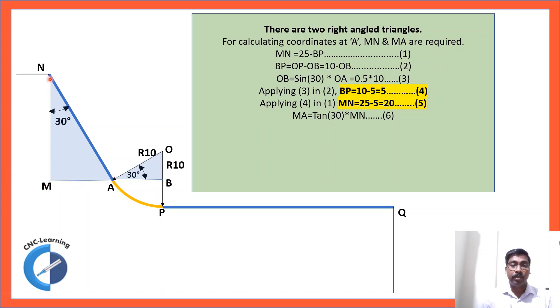we already saw 25 minus BP. So, 25 and BP we got as 5. So, MN is 20. Now, how to calculate MA? You have this right angle triangle and now you have this adjacent side. Now, MA is opposite side. So, Tan 30 you know it is opposite side by adjacent side. So, MA which is opposite side equals Tan 30 multiplied by adjacent side.